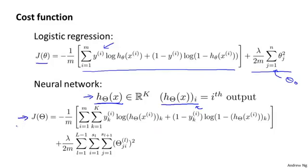My cost function J(theta) is now going to be the following: minus 1 over m of a sum of a similar term to what we have for logistic regression except that we have this sum from k equals 1 through K. This summation is basically a sum over my K output units. So if I have 4 output units, that is if the final layer of my neural network has 4 output units, this is a sum from k equals 1 through 4 of basically the logistic regression algorithm's cost function but summing that cost function over each of my 4 output units in turn.